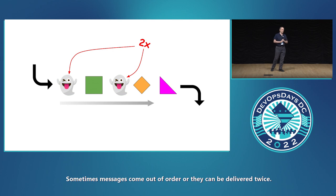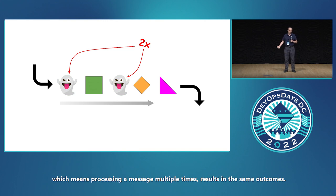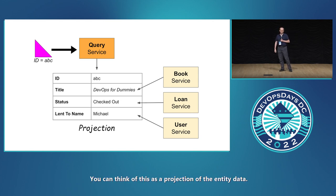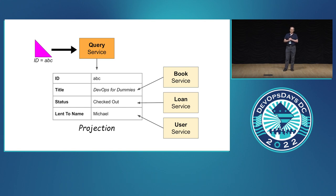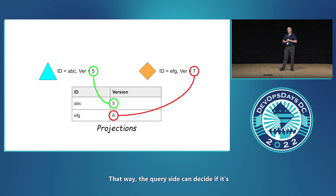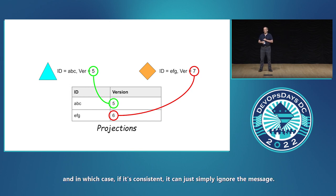There will be problems. Sometimes messages come out of order or they can be delivered twice. One thing you can do on the query side is to implement idempotent processing, which means processing a message multiple times results in the same outcome. To support complex queries, the query side data is often denormalized or aggregated, often from multiple sources — you can think of this as a projection of the entity data. Including version numbers in your messages can also help a lot. That way, the query side can decide if it's already consistent or if it needs to be updated, and if it's consistent, you can simply ignore the message.